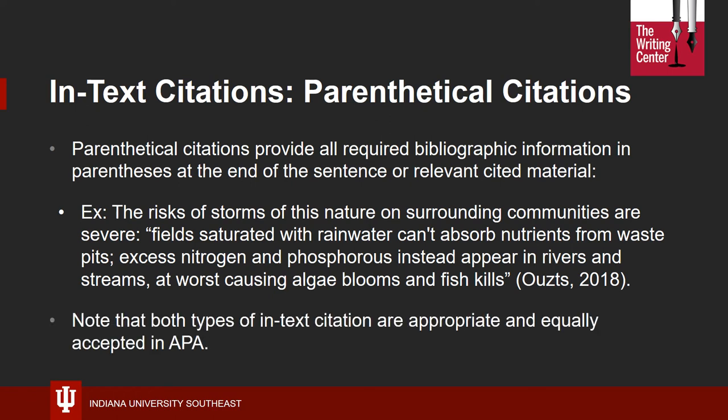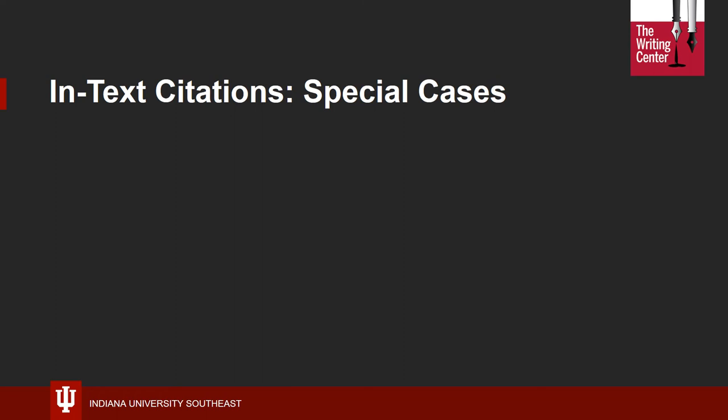In APA, you may always use either narrative citations or parenthetical citations, and you will generally find that authors use blends of both types in their writing. Neither type is preferred over the other. If you have a single author, you will merely need to provide the author's last name and the year of publication in your in-text citations for that piece.